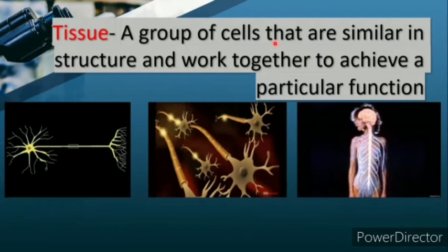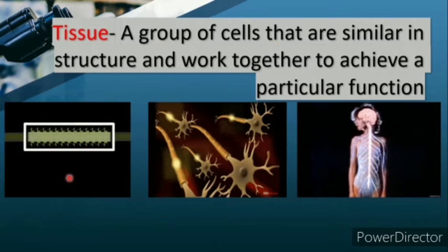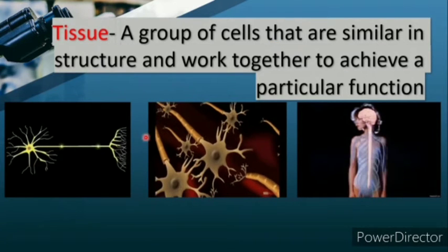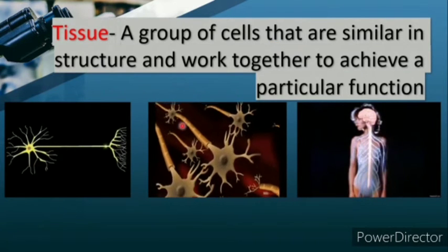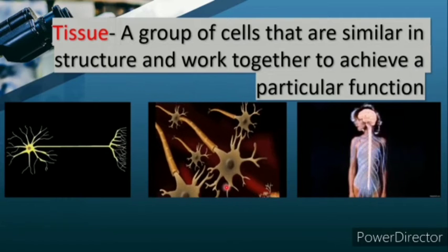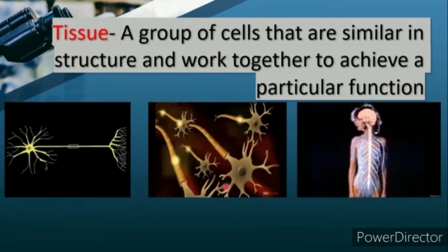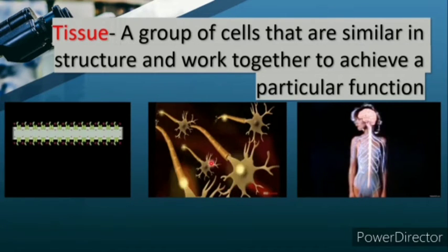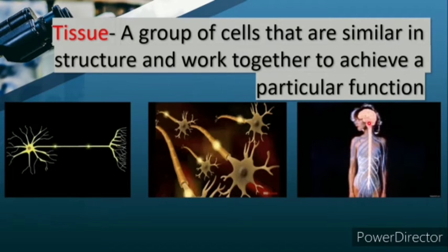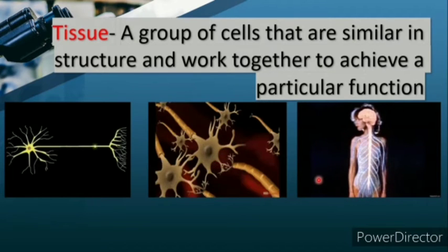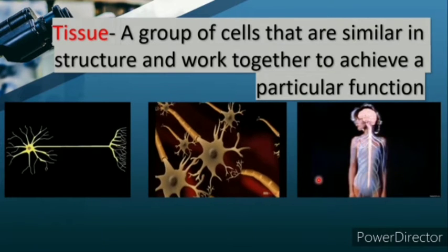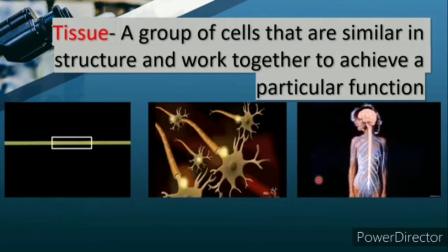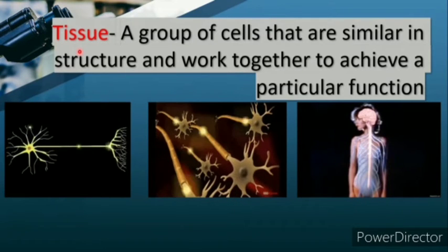This is known as tissue. Tissues are nothing but a group of cells - here a group of neuron cells - that are similar in structure and work together to achieve a particular function, in this case transferring messages. This is known as tissue.